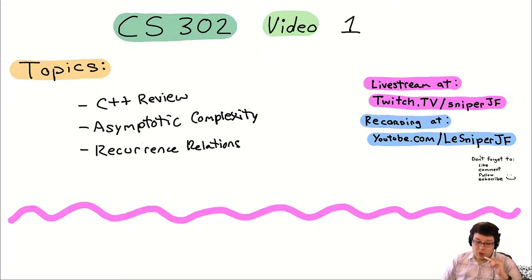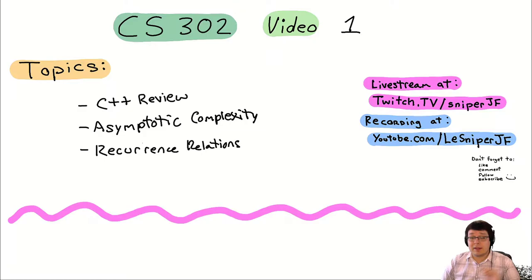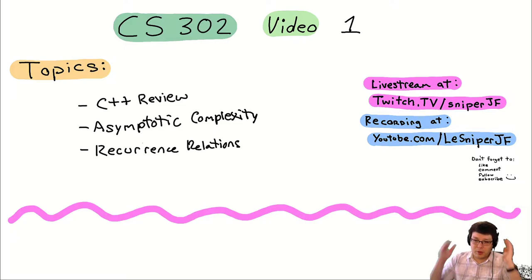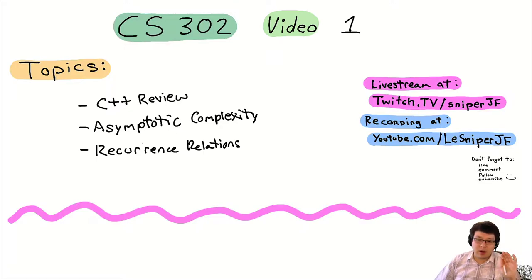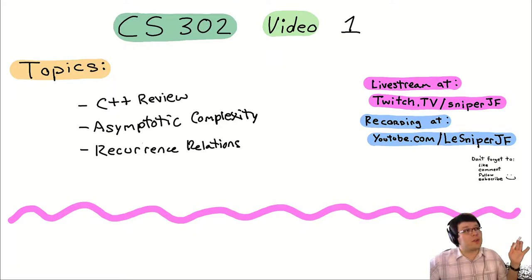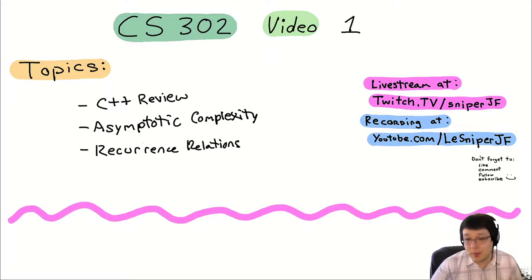Recurrence relations is the hardest topic of the course because it's very math heavy and recursion gets involved. It's a big scary topic — people see it and think 'this is extremely hard, what am I going to do?' But fortunately we start with the hard part and then move to the easier parts. Get it out of the way first.